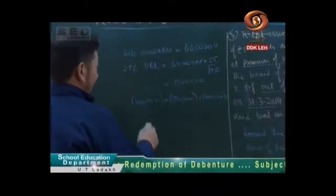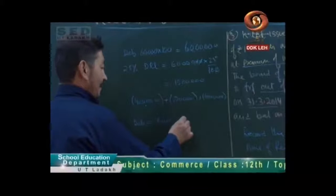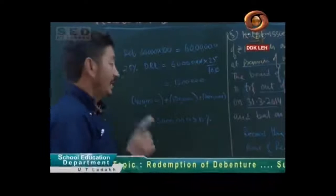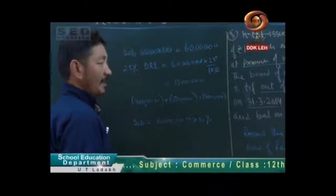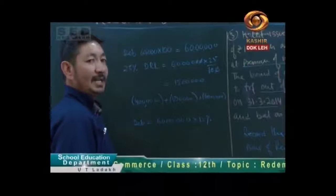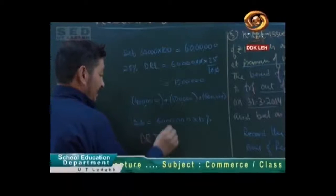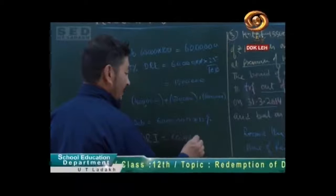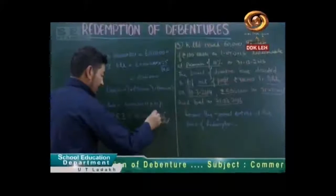And another thing: the amount of debenture is 60 lakhs. 15% of the amount of debenture goes to Debenture Redemption Investment, which I have told you in the previous lecture. We have to create a Debenture Redemption Investment account.